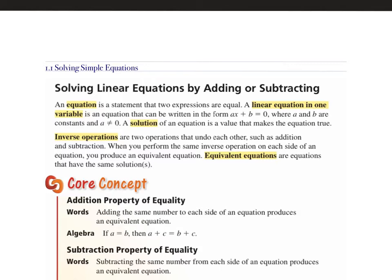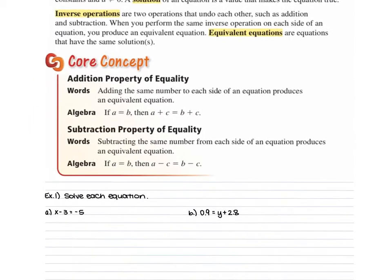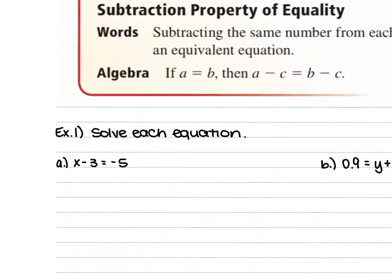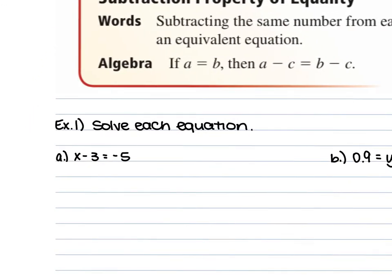Equivalent equations are equations that have the same solutions. For example 1, we're solving each equation. For A, we're given x minus 3 is equal to negative 5. We want to use inverse operations with that minus 3 in order to get what x is equal to. So we would just add 3 to both sides. The 3's would cancel, the x drops down, and you have negative 5 plus 3.